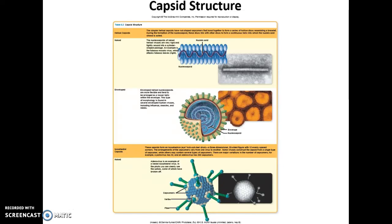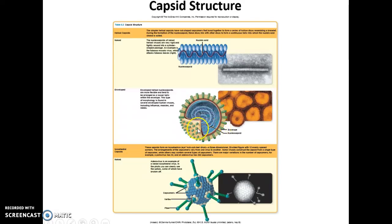Table 5.2 gives examples of capsid structure. First, helical capsids are arranged in a helical or circular fashion. The tobacco mosaic virus is a naked helical example. Then there is a helical enveloped virus — just circular — with a nucleocapsid, an envelope on the exterior, and spikes coming out.